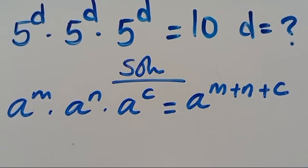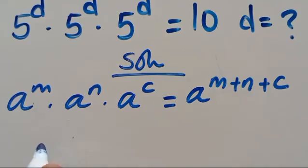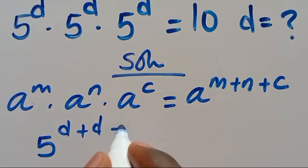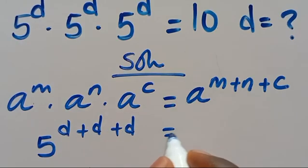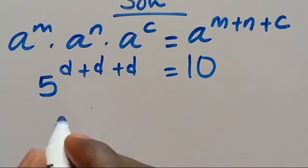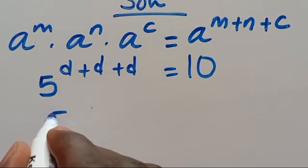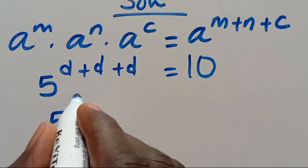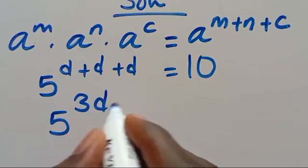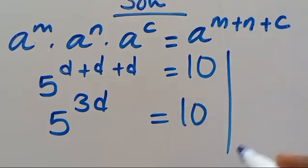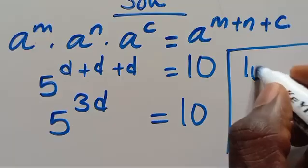So likewise here, we are going to have 5 to the power of D plus D plus D equals 10. So from here we have D plus D plus D giving us 3D, so 5 to the power of 3D equals 10.